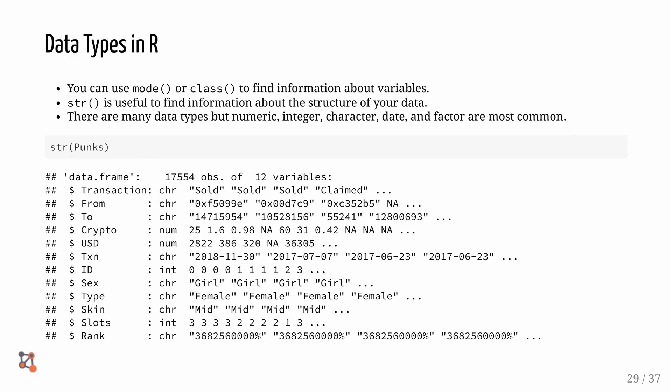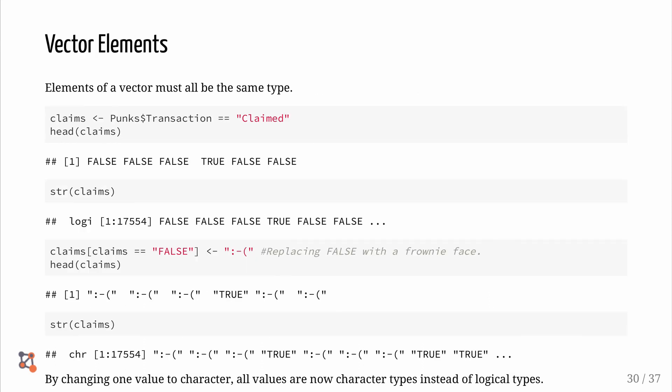There are a few different data types in R. Let's have a look at a few. You can use mode or class to find information about variables. Structure is useful to find information about the structure of your data. There are many data types, but numeric, integer, character, date, and factor are most common. Elements of a vector must all be the same type. For example, if we look at claims, these are all logical statements. However, if we replace the false statement with a frowny face, as shown below, the new structure says that we have characters instead of logical types.